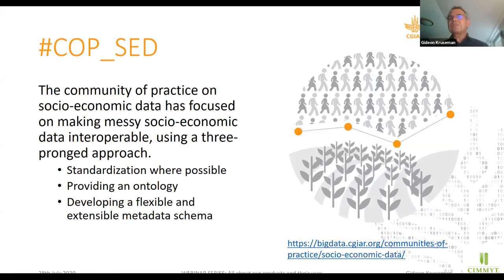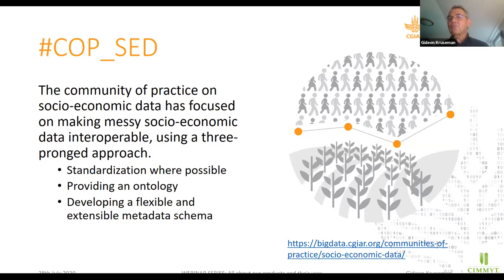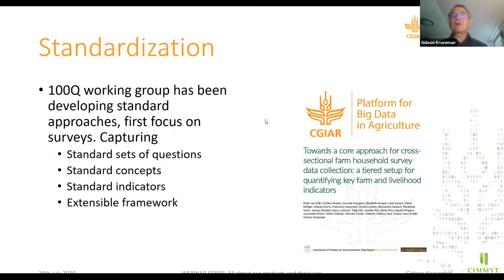So what we decided to do is to go for a three-pronged approach. One part is to do some standardization where it's possible. The second was to provide an ontology of socio-economic terms that can be linked to the standardized elements. And the third component is the development of a flexible and extensible metadata schema, which will allow us to tag data sets with relevant ontology terms in a way that works for the kind of really messy socio-economic data.